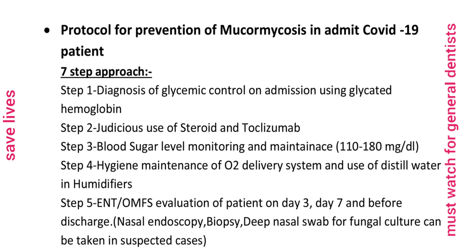The protocol for prevention of Mucormycosis in ward-admitted COVID-19 patients uses a seven-step approach. Step 1: diagnosis of glycemic control on admission using glycated hemoglobin — ensure blood sugar is controlled. Step 2: judicious use of steroids and tocilizumab, because these predispose to fungal infection due to immunosuppression. Physicians will decide when to give these — do not use them injudiciously.